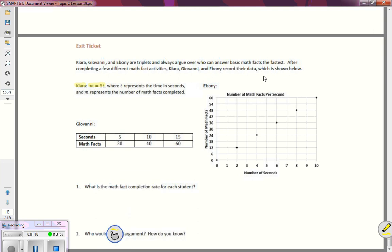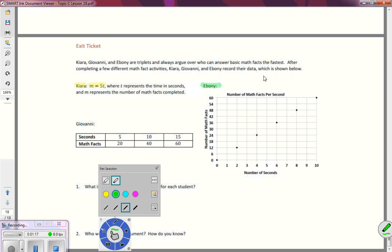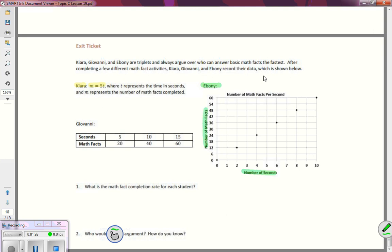We have Ebony, whose data is set up in a graph. And you can see that she has her number of seconds and her number of math facts, and she has them plotted on the graph.